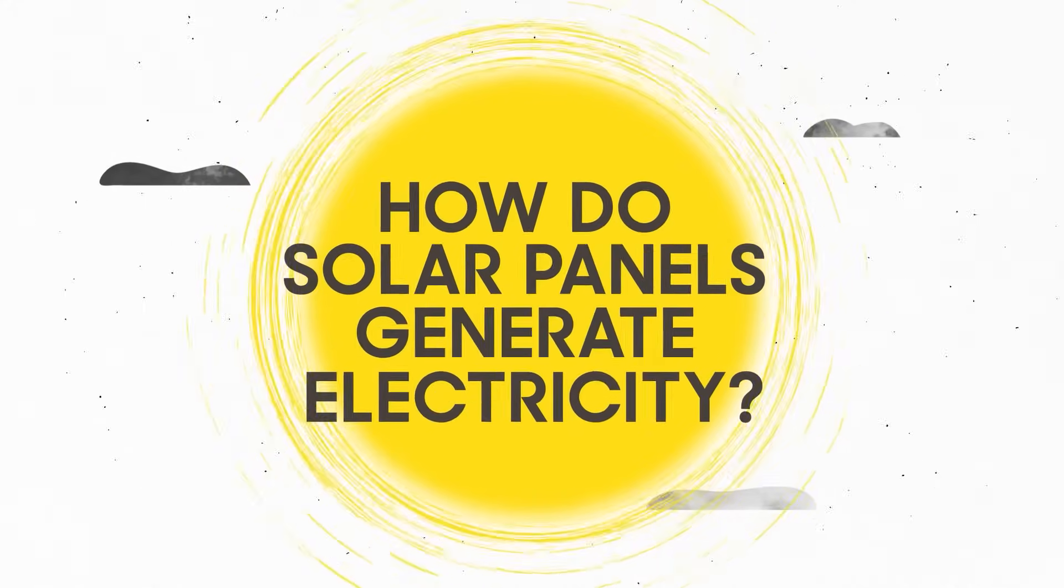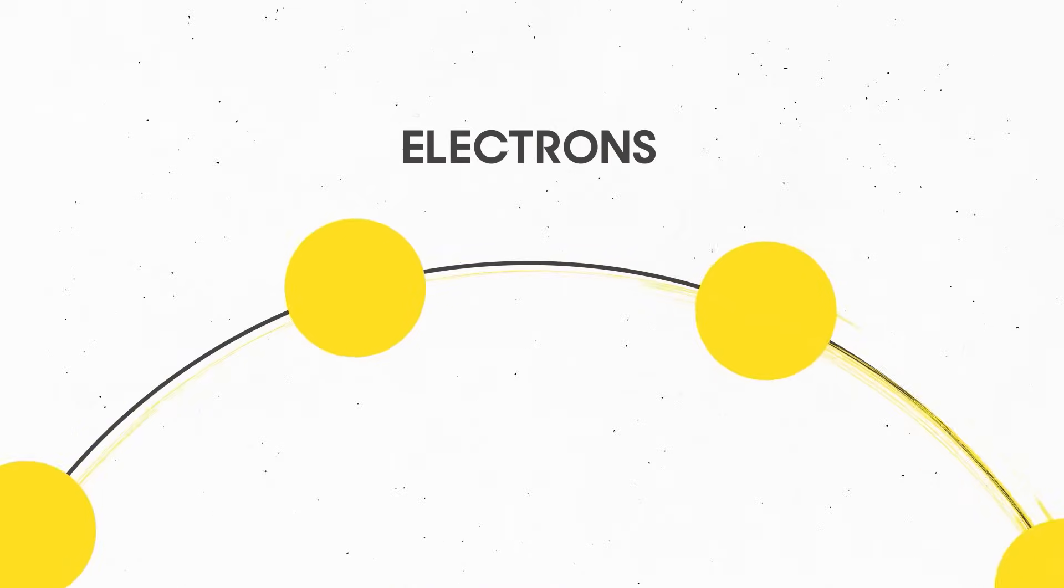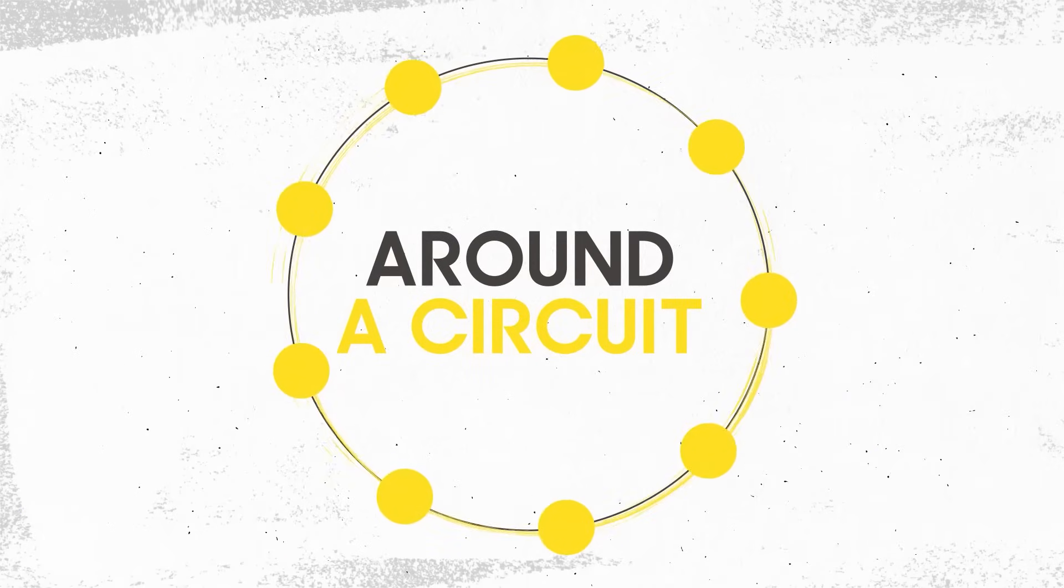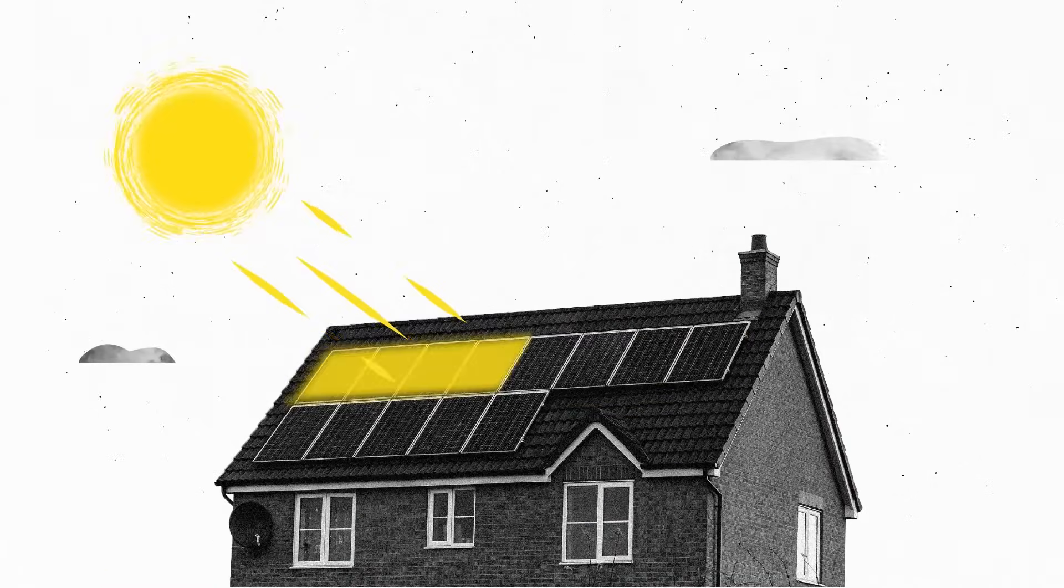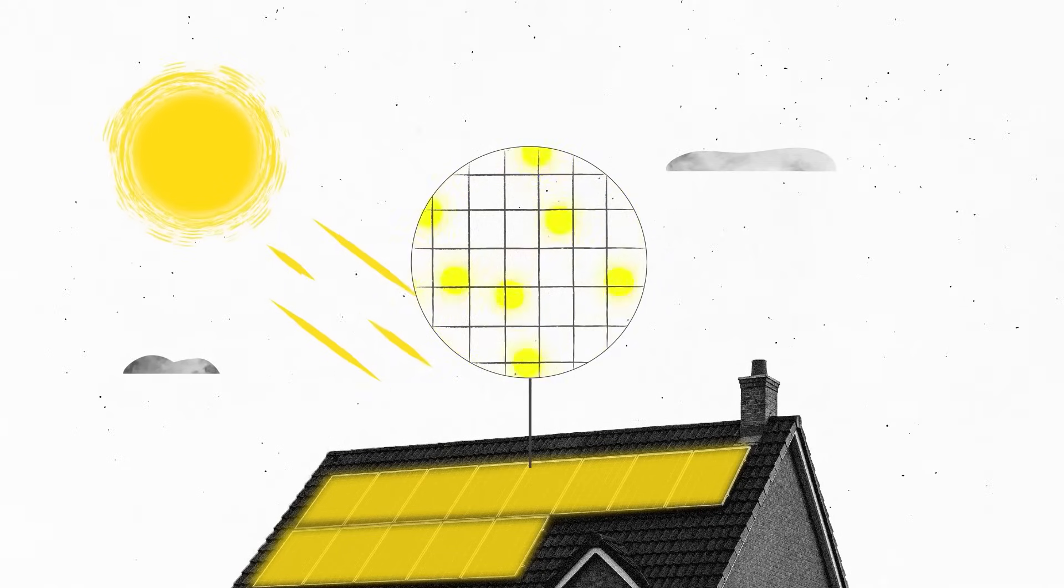How do solar panels generate electricity? Electricity is the flow of electrons around a circuit. In a solar panel, energy from the sun prompts these electrons to start flowing. But how?